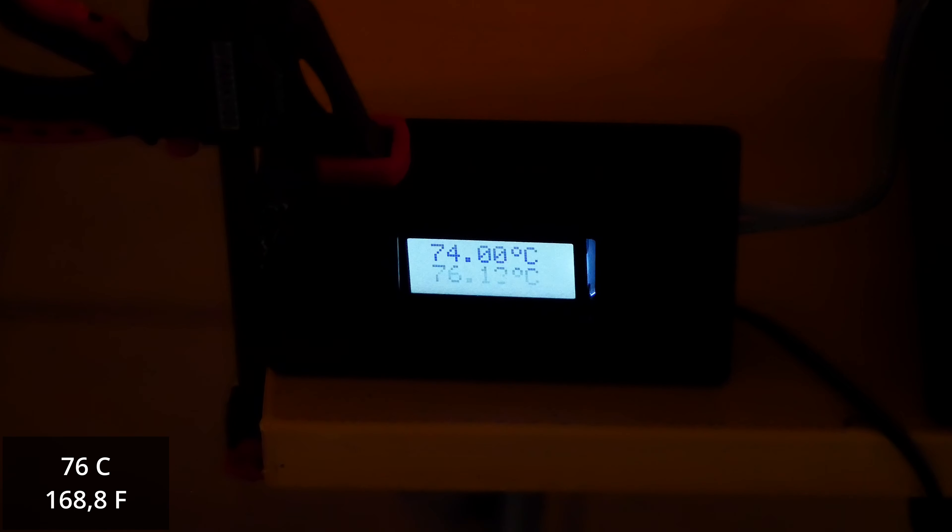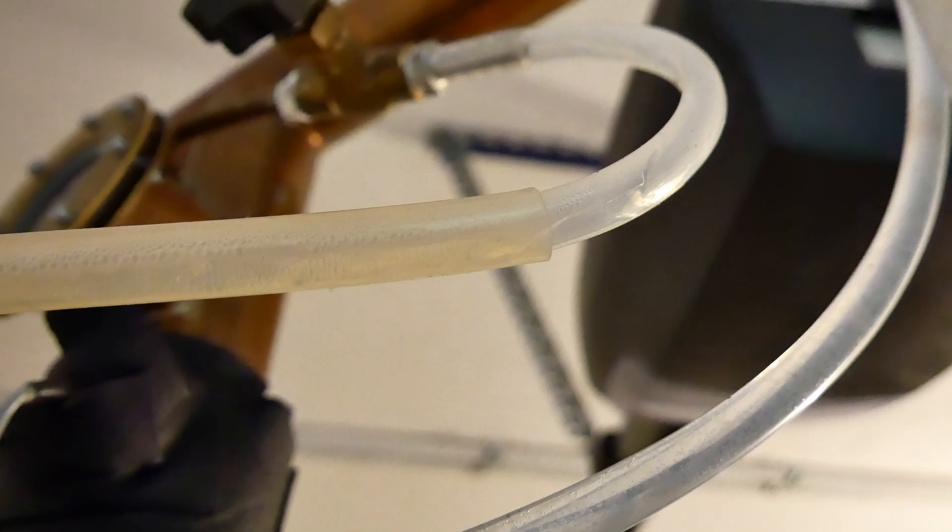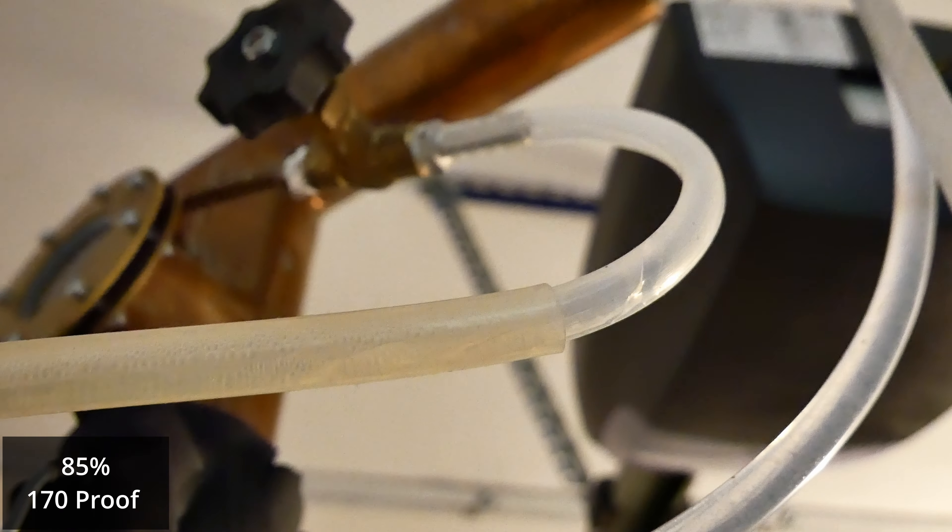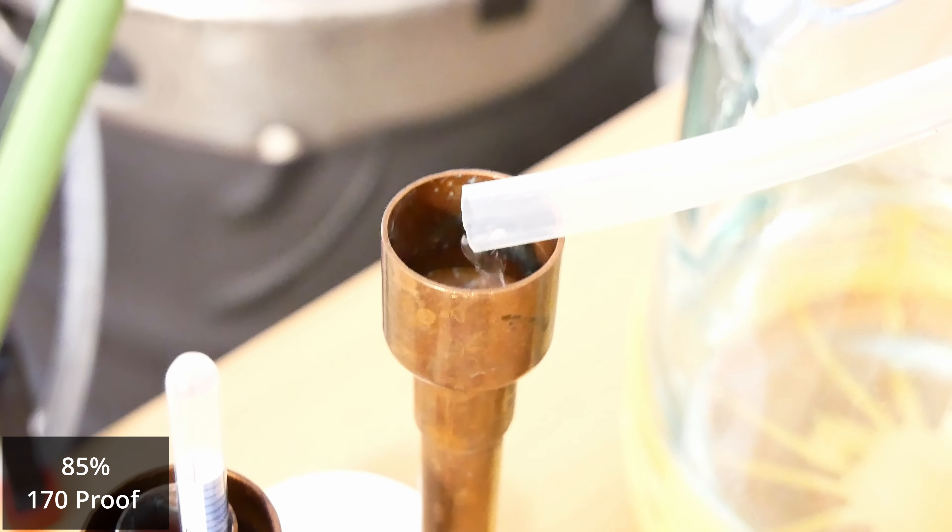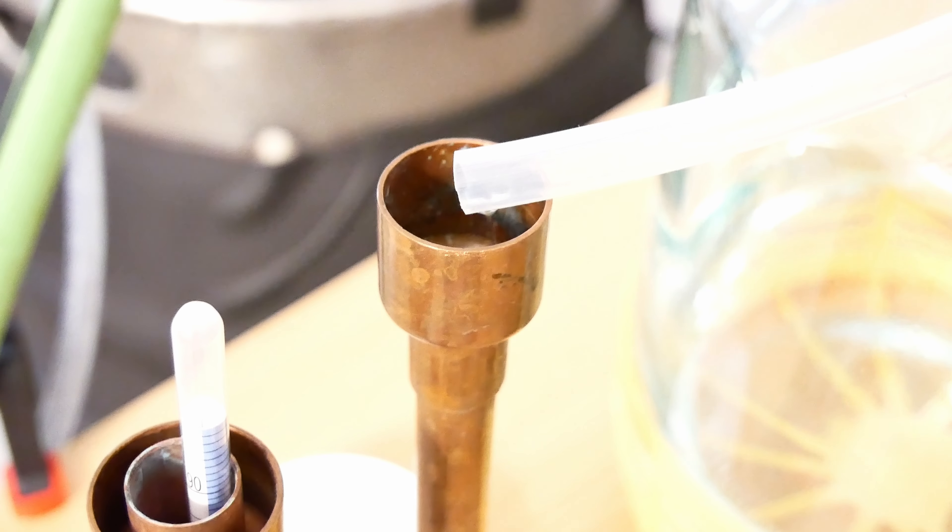Now let's move on to our distiller. The temperature in the boiler is about 76 degrees celsius and as we can see in the video we start to receive alcohol. The alcohol strength received is currently 85%. Screw down the heaters so that the temperature in the boiler and on the column slowly and steadily increases.